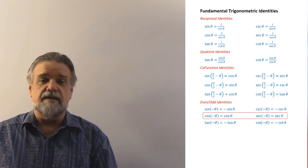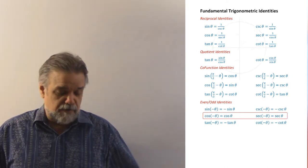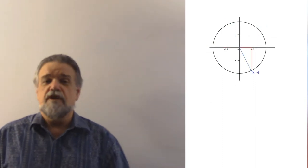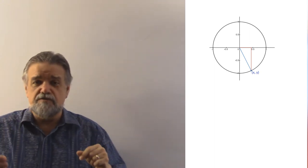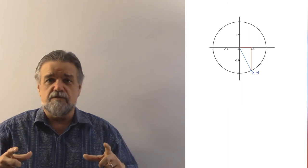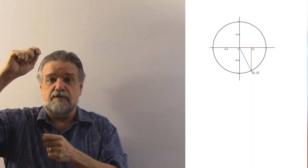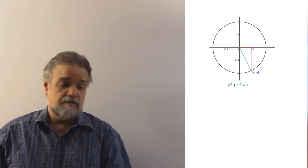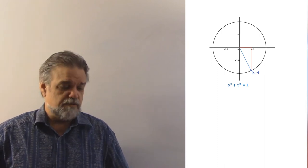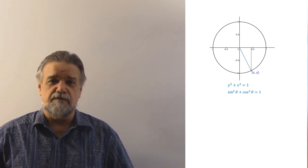Finally, the Pythagorean identities. No matter what angle you have — quadrant one, two, three, or four — you can always draw a triangle on the unit circle with a horizontal side, a vertical side, and a hypotenuse. Since we're on the unit circle, the hypotenuse is always one. Using the Pythagorean theorem, x squared plus y squared equals one. On the unit circle, y is the sine and x is the cosine, so sine squared of theta plus cosine squared of theta equals one.